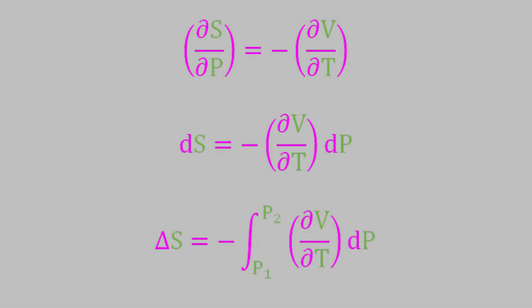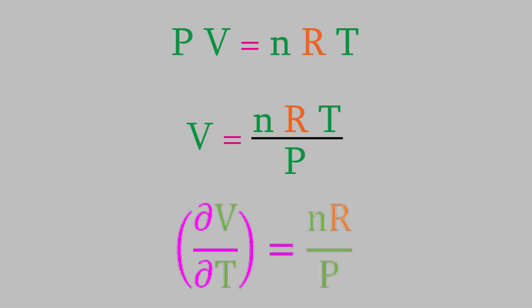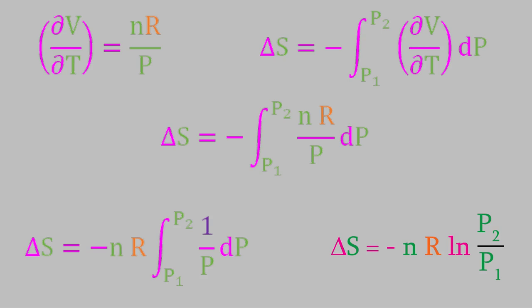If the system is an ideal gas, we can use the ideal gas law. We solve for the volume, and then take the partial derivative with respect to temperature. When we do, we get this. Now we can plug that expression into our integral. When we solve it, we get this expression. This is another expression for the entropy that allows us to calculate entropy by measuring a simple property of the system, in this case, the pressure.